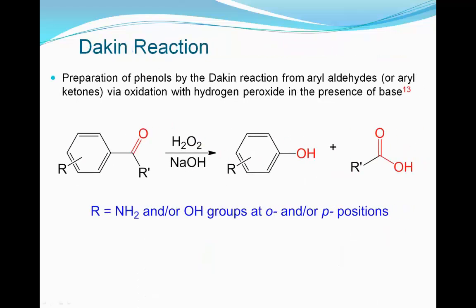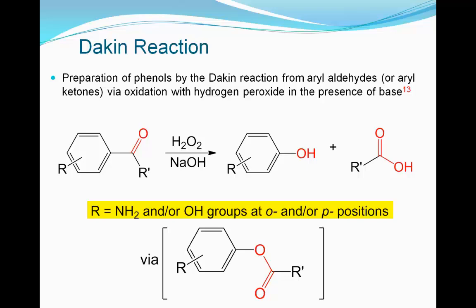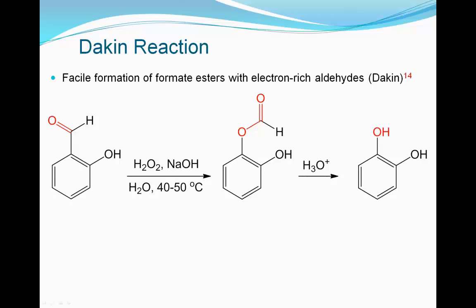The Dakin reaction enables the preparation of phenols from aryl aldehydes or ketones via oxidation with hydrogen peroxide in the presence of a base. The ester formed as an intermediate is subsequently hydrolyzed to yield the substituted phenol product and a carboxylic acid byproduct. Ortho or para-substituents such as amino and hydroxy groups favor this reaction. Electron-rich aromatic aldehydes such as salicylaldehyde derivatives commonly undergo the Dakin reaction. In these cases, formation of the ester intermediate is typical, and hydrolysis of this ester gives catechol as the final product.